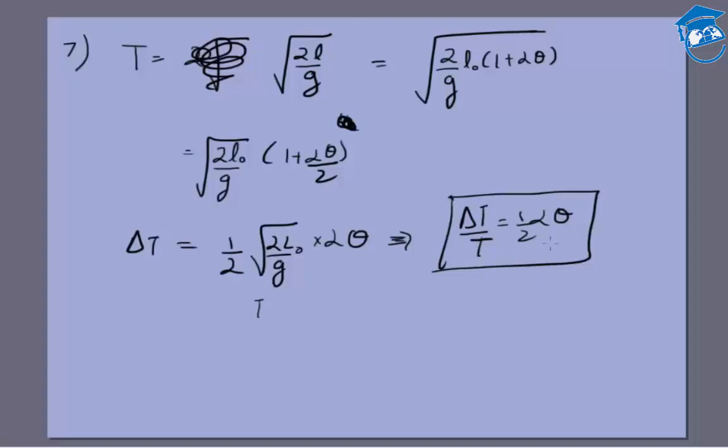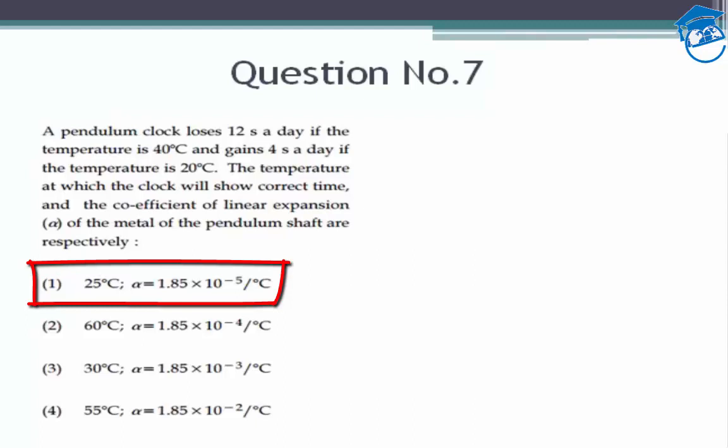We are given two cases. In the first case the pendulum clock loses 12 seconds. Now if the clock is losing time, that means it shows a value which is smaller than the actual value, that means it actually had a smaller number of revolutions.